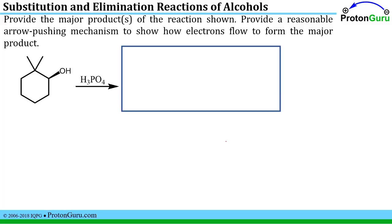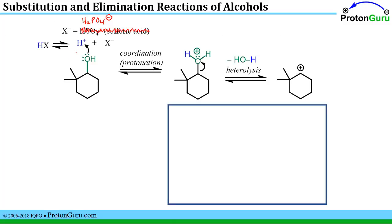Here's a similar question asking us to provide the major product and provide a reasonable arrow pushing mechanism for this. And again we see a strong acid with an alcohol.